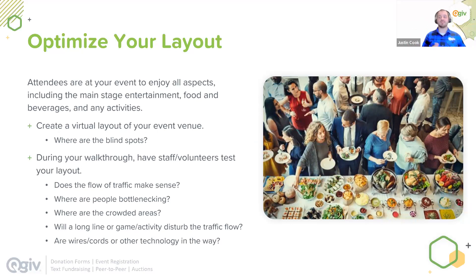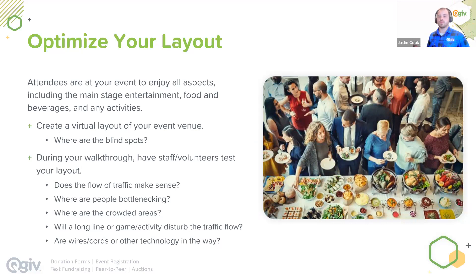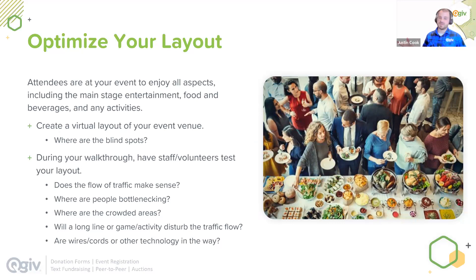Through the walkthrough, look at the flow of traffic. Are people bottlenecking in certain areas? Where are the crowded spots — around food and beverages? Is there a long line at a game or activity disturbing traffic flow? Are there wires and cords in the way that could cause trips or damage technology? QGIV has tools for table and seating management that let you create that virtual layout, optimize flow, and assign attendees and sponsors to specific tables.